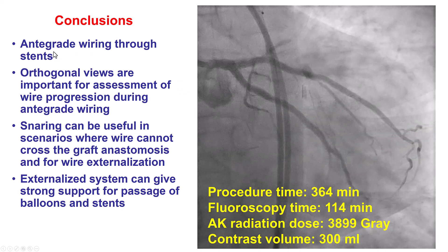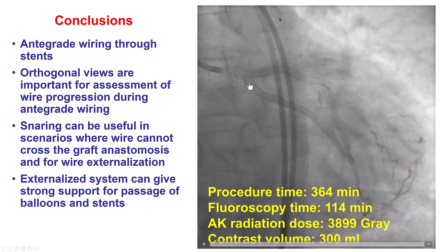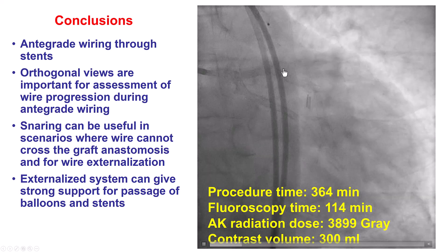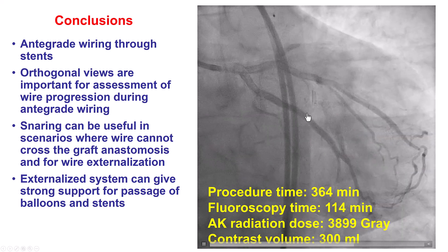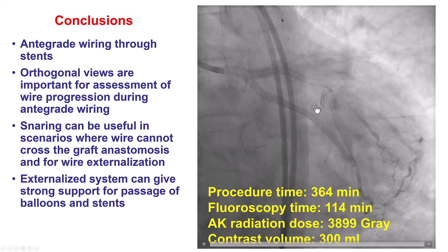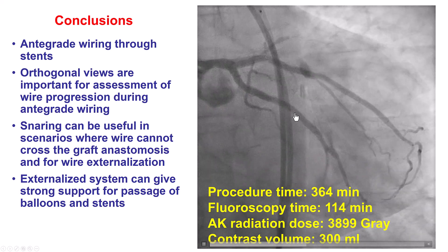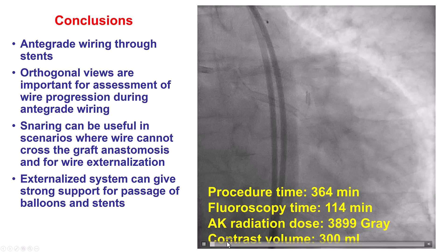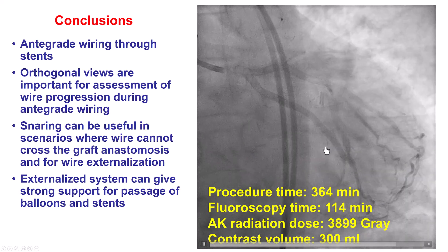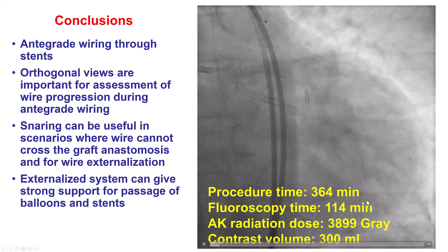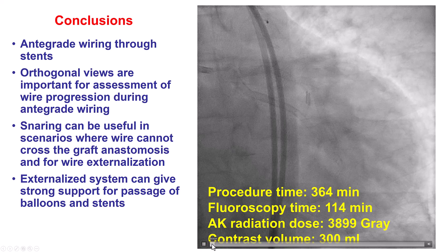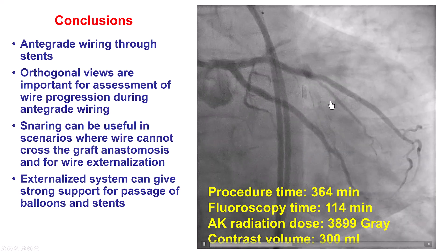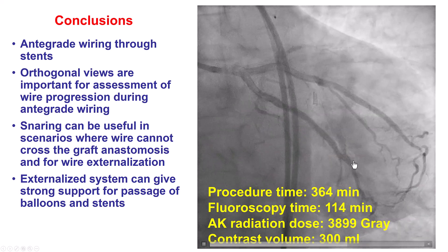The first lesson is that stents can help resolve proximal cap ambiguity — using those stents as a target helped advance guidewires antegrade and recanalize these very complex CTOs. Second, orthogonal views are key for ensuring the correct direction, especially in the circumflex which often has significant tortuosity. Third, the use of snaring: one challenge was that we could not navigate through the native OM into the distal OM because the vessel was tented from the saphenous vein graft. We delivered a snare through the SVG, advanced the antegrade wire into the snare, pulled it back to navigate through the bend, externalized the wire, and used a dual-lumen microcatheter to advance another guidewire to the distal vessel.